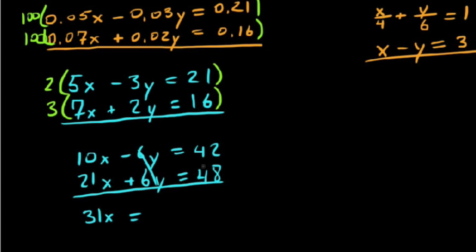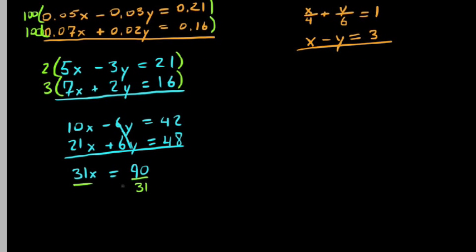So, 31x is equal to, it looks like we have 40 and 40 is 80, plus another 10 here, 90. So, we'd say, okay, so back-solving here, we'd say divide both sides by 31. And we have x equal to 90 over 31.